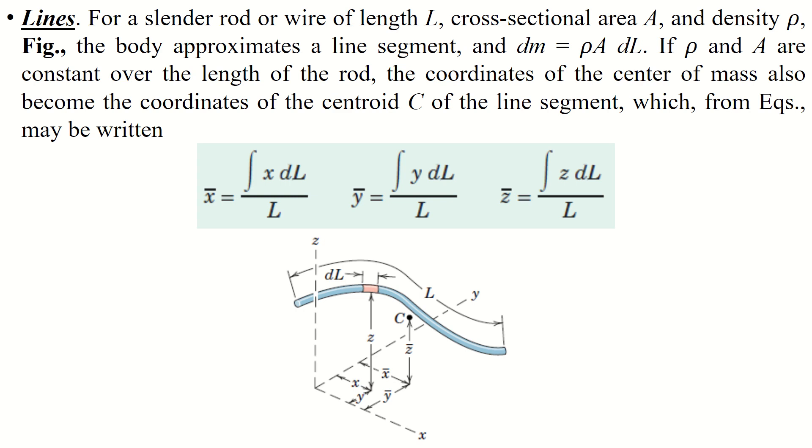Let us focus on lines. A line is defined as a cylindrical rod or wire of length L, cross-sectional area A, and density ρ. The body approximates a line segment where dm = ρA dL. If ρ and A are constant over the length of the rod, the coordinates of the center of mass also become the coordinates of the centroid of the line segment.